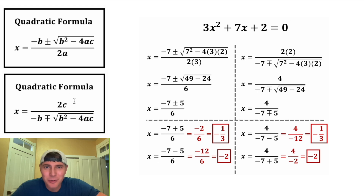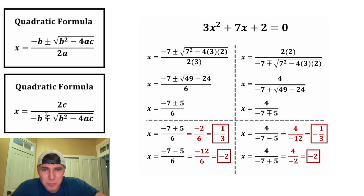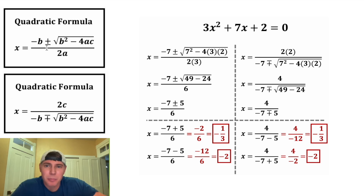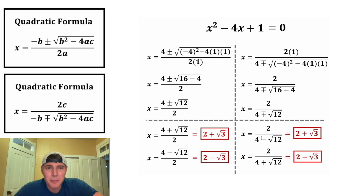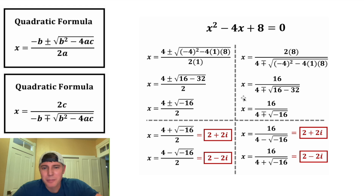So it actually worked out — this quadratic formula gave the same answer as this quadratic formula. One interesting observation: this was minus plus while this was plus minus. The minus version of this gave us the same answer as the plus version of this, and that will always be true. Here's another example where there's only one solution, negative 1 third — both equations gave the same thing. Here's an example with irrational solutions — they both gave the same irrational solutions. And here's another example with imaginary solutions. How exciting.